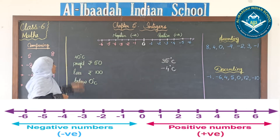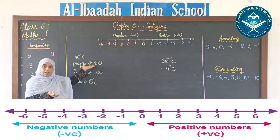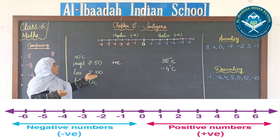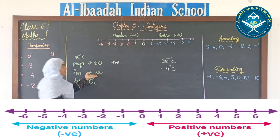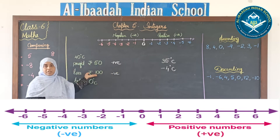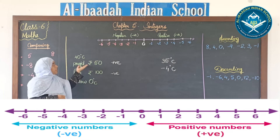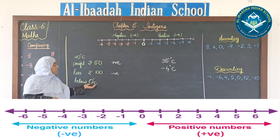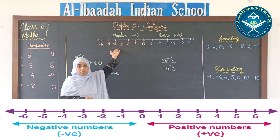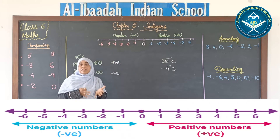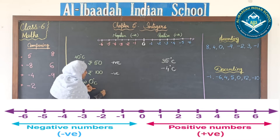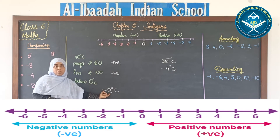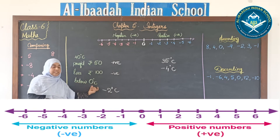Similarly, profit and loss: a profit of 50 rupees is a positive number — it has increased in value. A loss of 100 rupees is negative — it becomes less. Also, 40 degrees Celsius is a positive integer. Anything below 0 degrees Celsius will be negative. For example, 2 degrees below 0 degrees Celsius is written as minus 2 degrees.